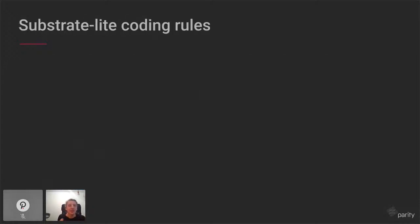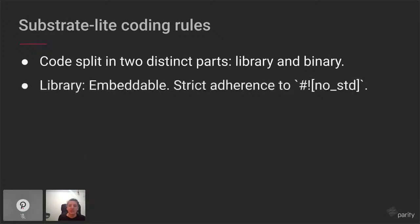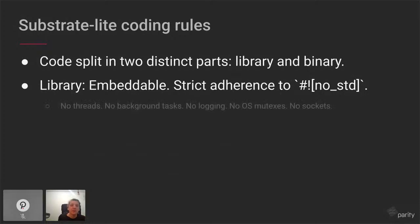How did we achieve that? Substrate Light is split into two distinct parts: the library part and the binary part. The binary part is built on top of the library. The library, which is around 90% of the code, is entirely written to be embeddable — it adheres very strictly to no-std, meaning it cannot use the standard library, only the core library. The library is not allowed to use threads, background tasks, logging, OS mutexes, or sockets. The networking is implemented without sockets; instead, it emits requests for the binary part to actually spawn the socket.